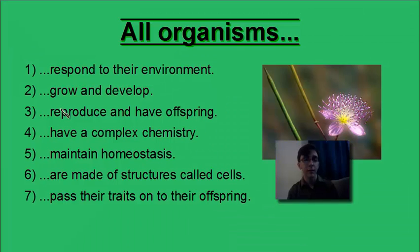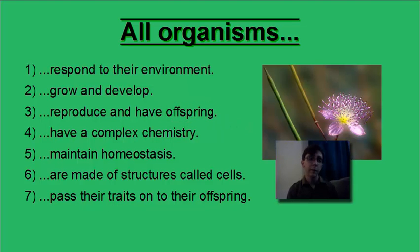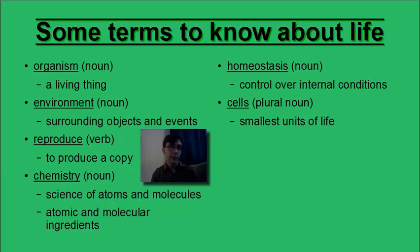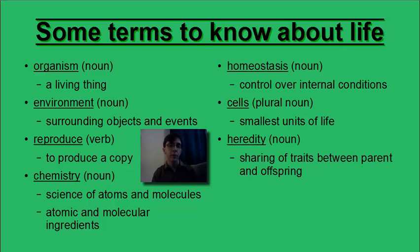Next, we'll see that all living things pass their traits onto their offspring. Remember that reproduction involves forming offspring from parents. Parents can make more of themselves by making offspring, which are copies of the parents. Heredity is a word that means the sharing of traits between parent and offspring. Essentially, you can think of this as the reason why we look like our parents — we share features and characteristics with them.